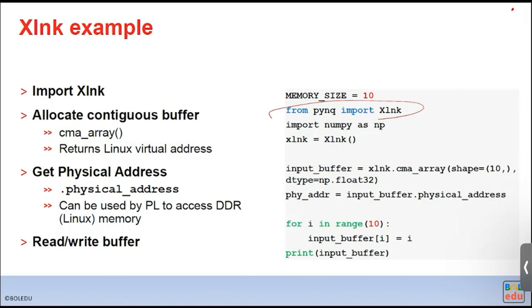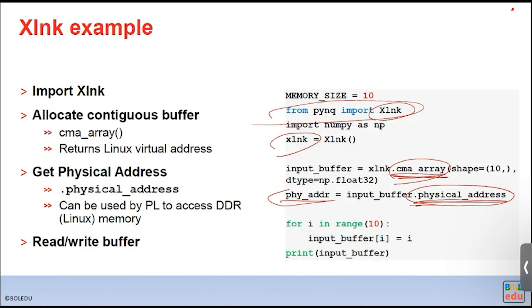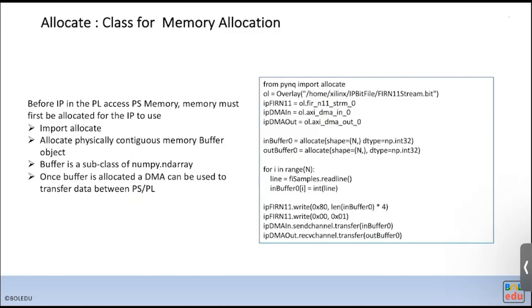In the XLink code example, you import the XLink package, get a handle, and use the contiguous memory array function to ensure continuous memory allocation, then obtain the physical address. In your lab you use 'allocate' instead of XLink directly — allocate directly provides physically contiguous memory buffers and is used before calling the DMA transfer.